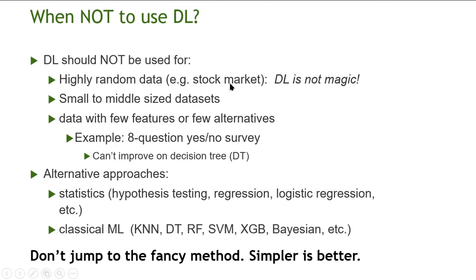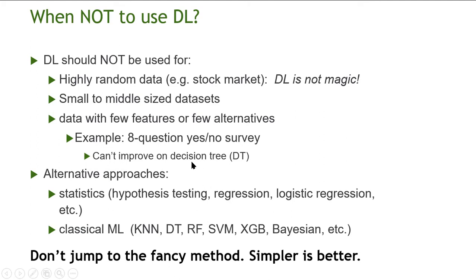Deep learning should not be used for highly random data like the stock market — deep learning is not magic and cannot produce something from nothing. It should not be used for small or mid-sized data sets, nor for data with few features or few alternatives. For example, if you have an eight-question yes-or-no survey, there is an exact solution using a decision tree that you mathematically cannot improve on. If you understand statistics, you can identify such situations; statistics is important for choosing the right machine learning method.